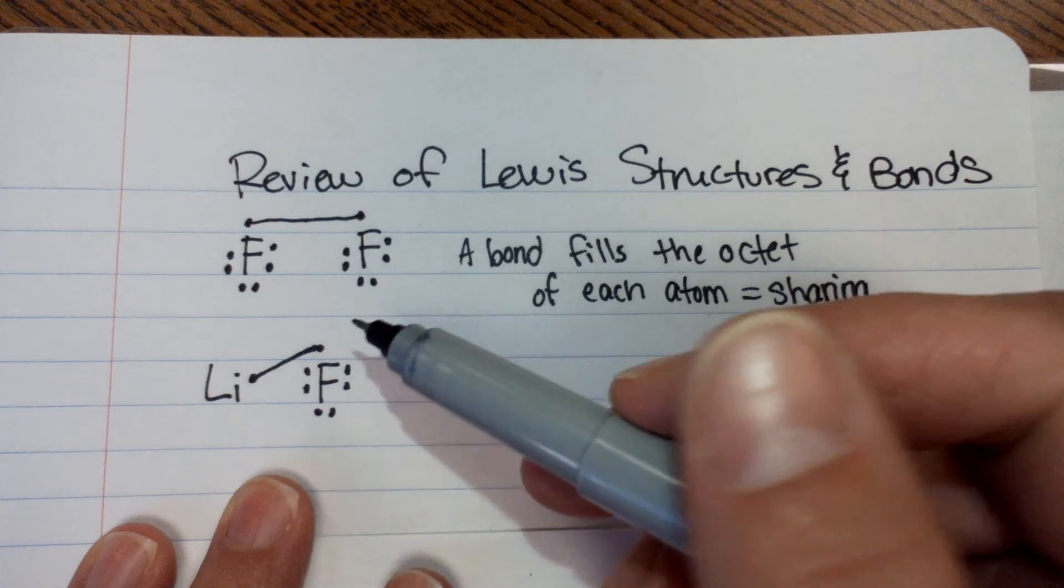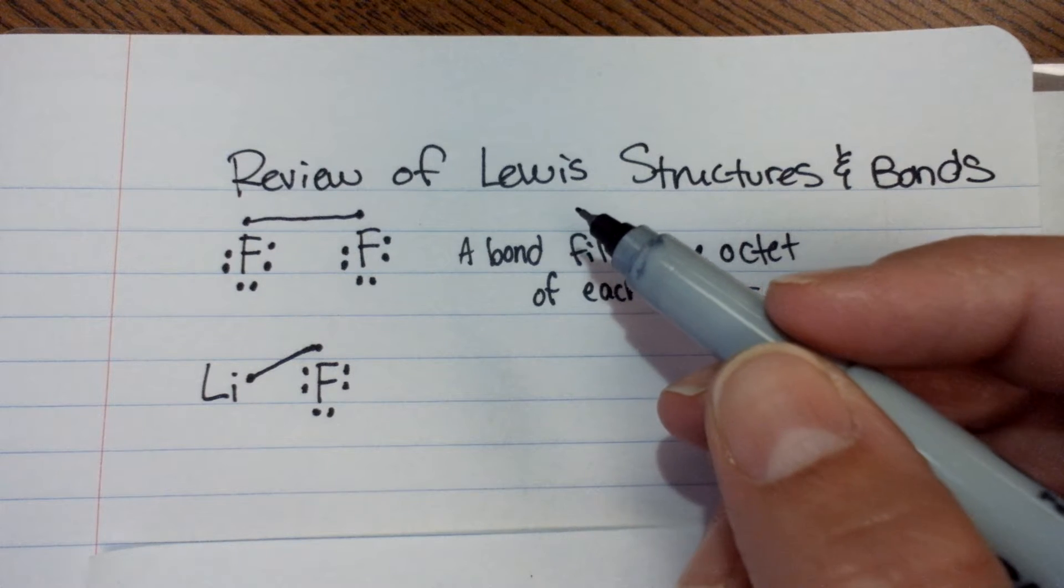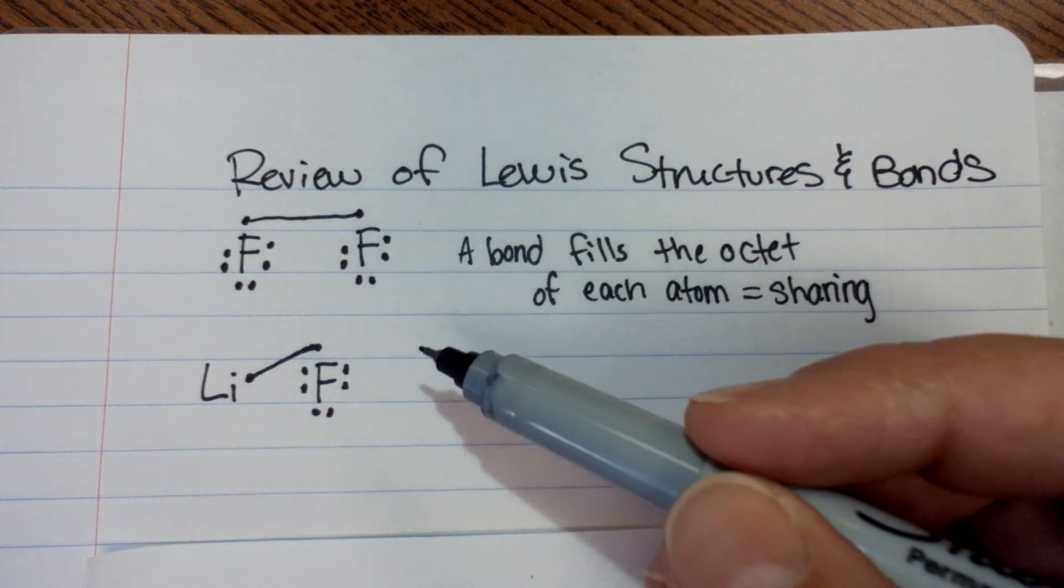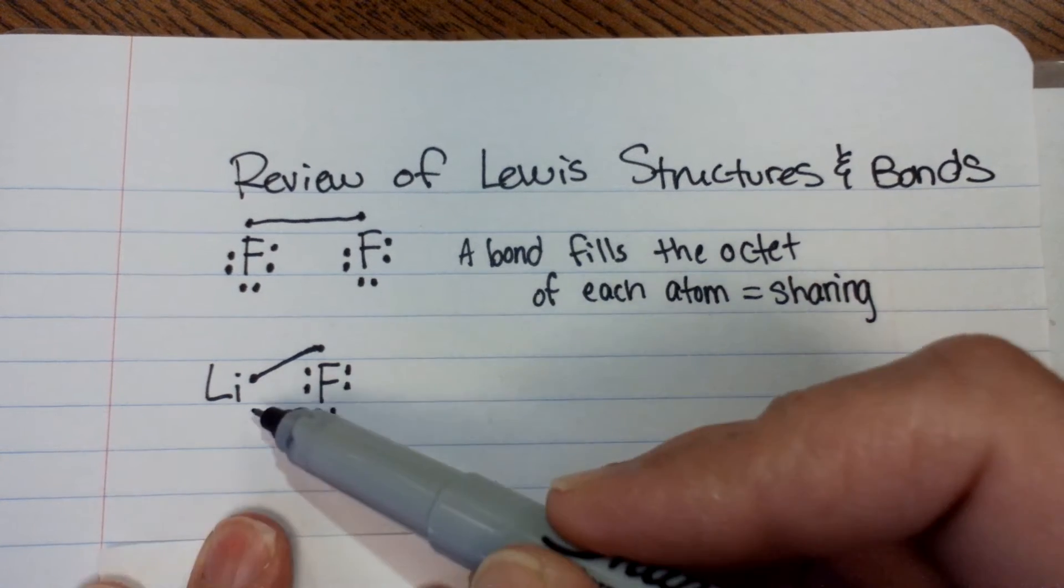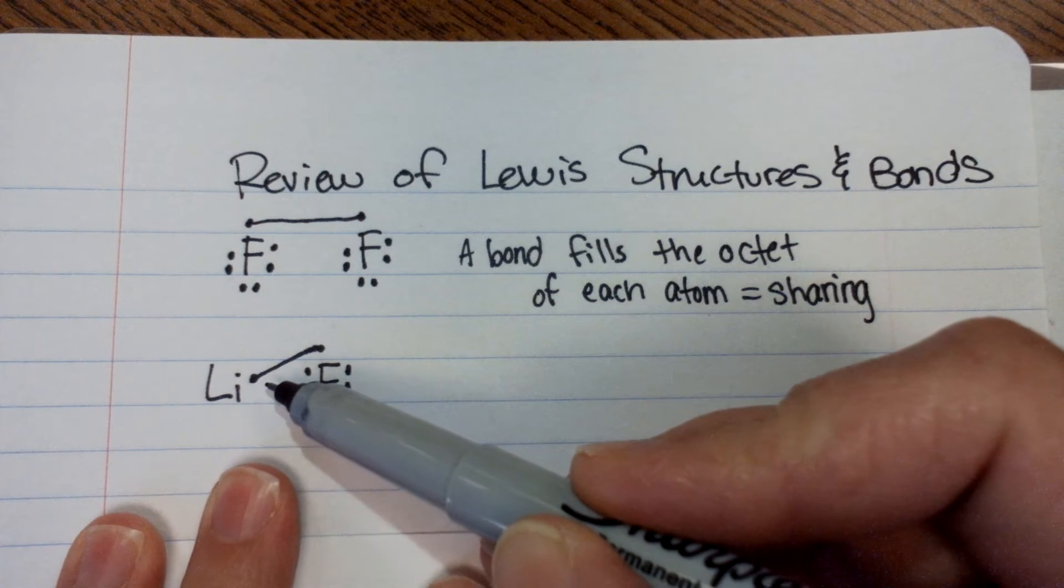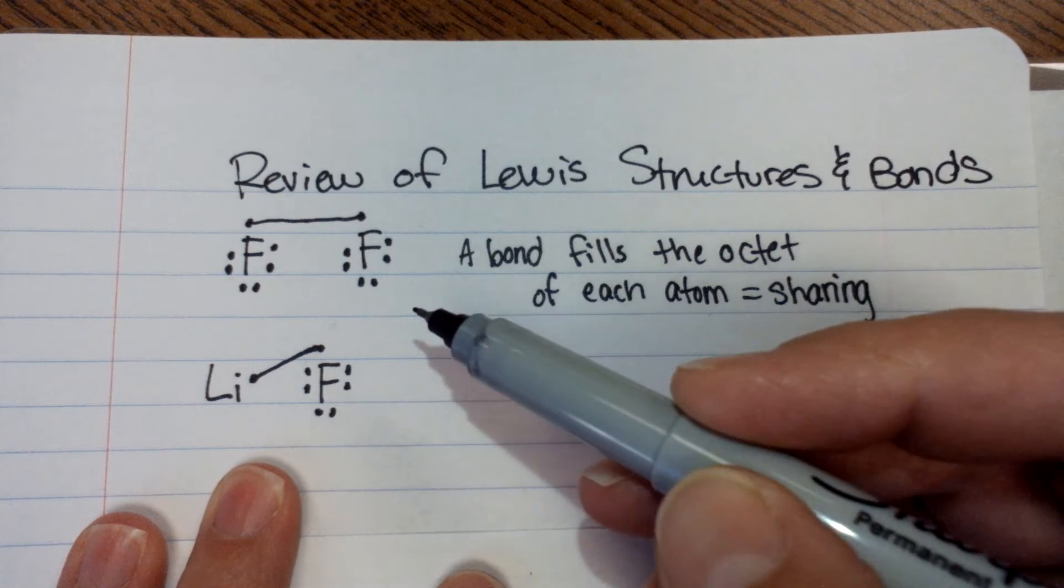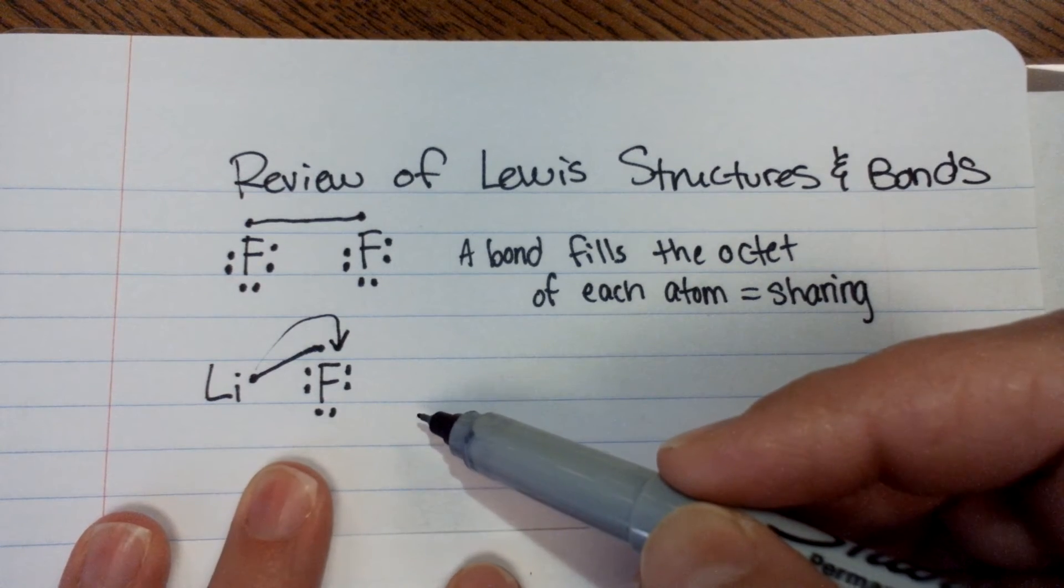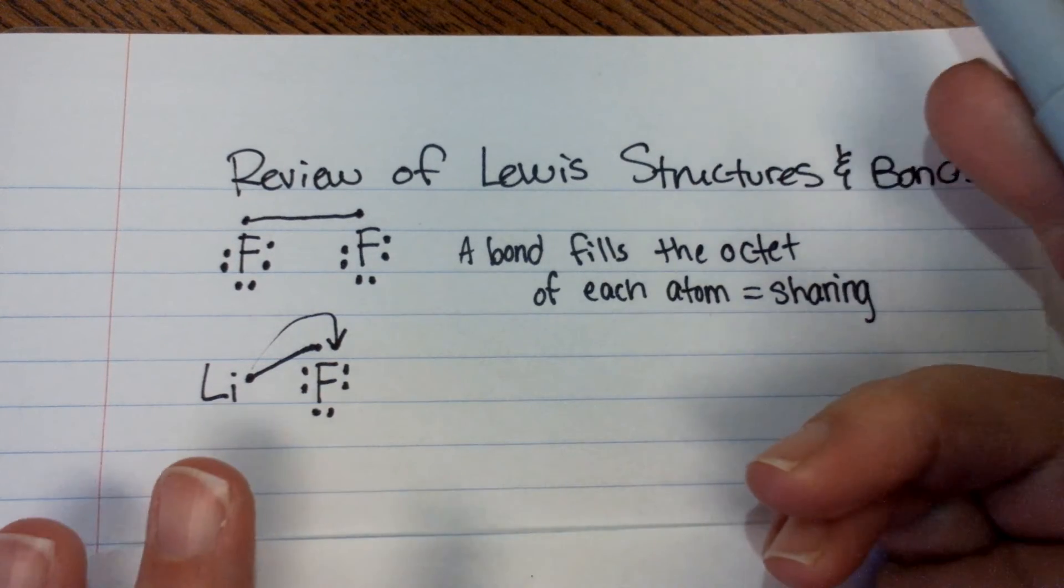So what happens? If lithium's still not happy, even though it can make that bond, what really happens? No thoughts? Any thoughts? Here's what really happens. Lithium's little electron spends all of its time over here on fluorine. So this electron kind of stays over there. Kind of like somebody who has a best friend goes and just kind of lives there at their best friend's house.